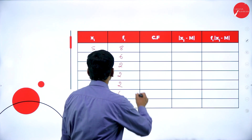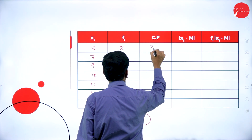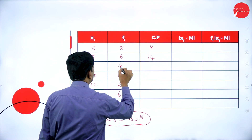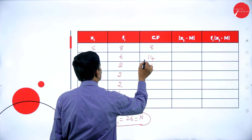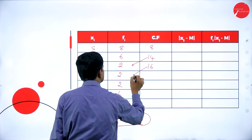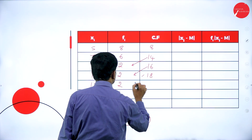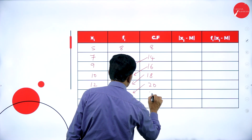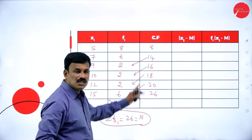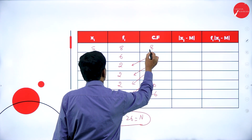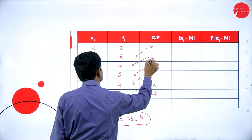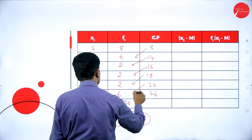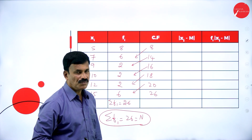Now find the cumulative frequency. The first fi is 8, so cf is 8. Add: 8 plus 6 is 14. Then 14 plus 2 is 16. 16 plus 2 is 18. 18 plus 2 is 20. 20 plus 6 is equal to 26. So the cumulative frequencies are 8, 14, 16, 18, 20, 26.